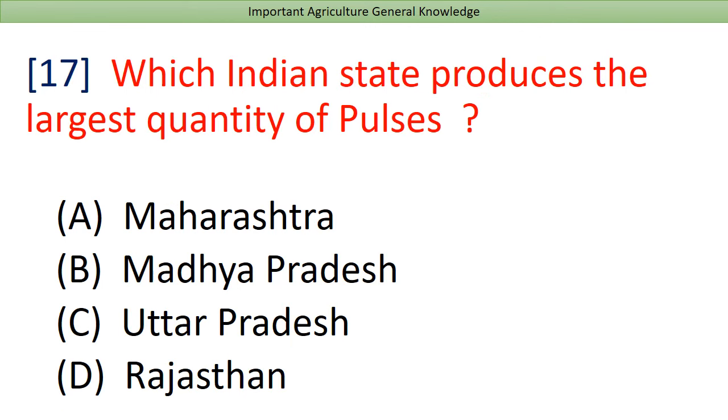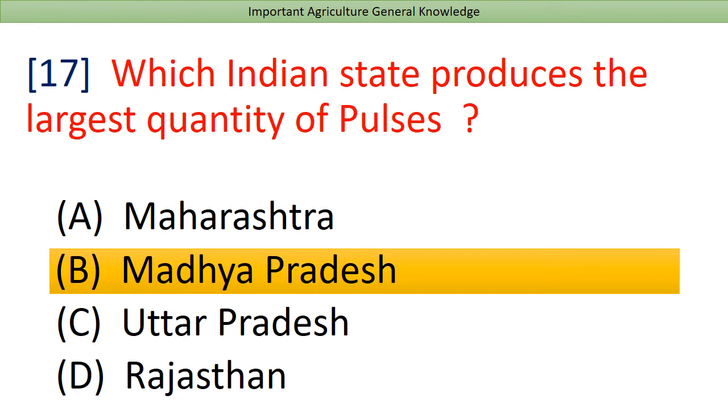Which Indian state produces the largest quantity of pulses? Answer: Madhya Pradesh.